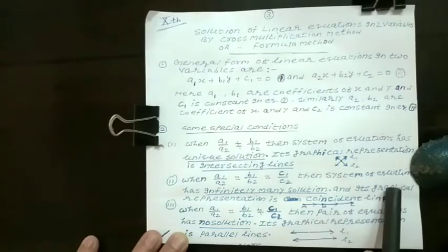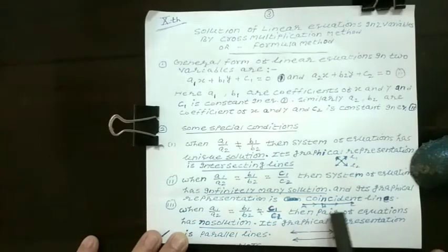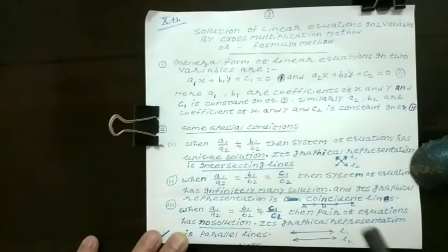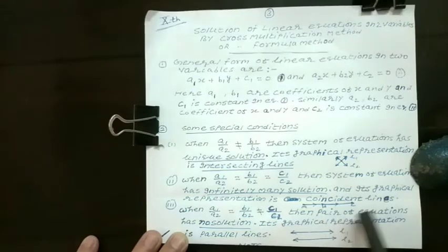And its graphical representation, if we represent this in a graph, it comes as coincident lines. That is, L1 and L2 are two lines, and these lines overlap, just overlap, one upon another. In English, it is known as coincident lines.